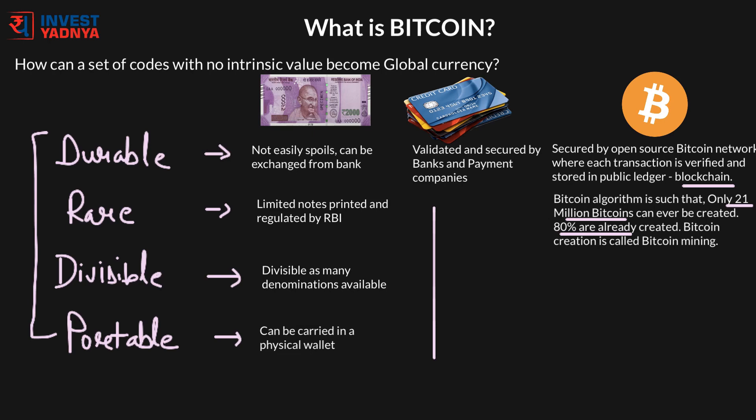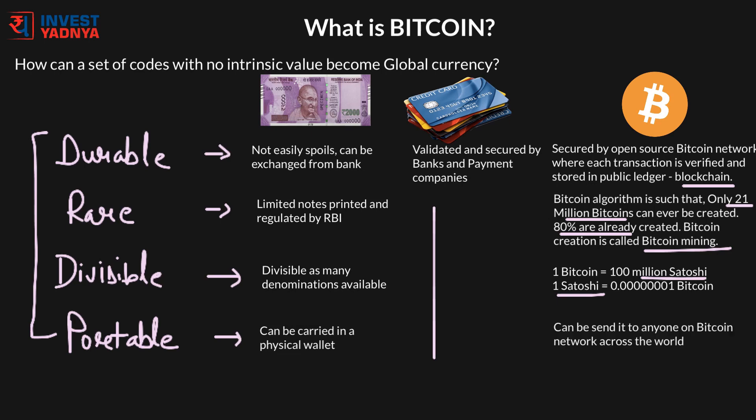This Bitcoin creation is called Bitcoin mining, where Bitcoins are created as an incentive for users to verify transactions. Bitcoin is also divisible — just as 1 rupee is divided into 100 paisa, 1 Bitcoin can be divided into 100 million satoshis and you can even spend 1 satoshi on the Bitcoin network. Bitcoin is of course portable, as you can send it to anyone, anywhere, anytime in the world.